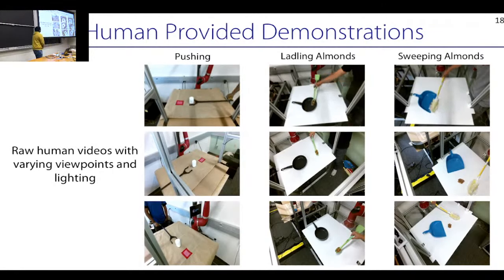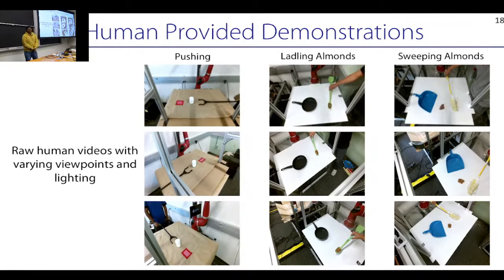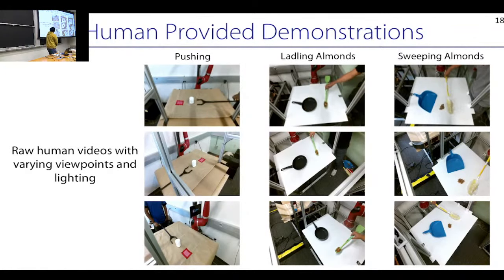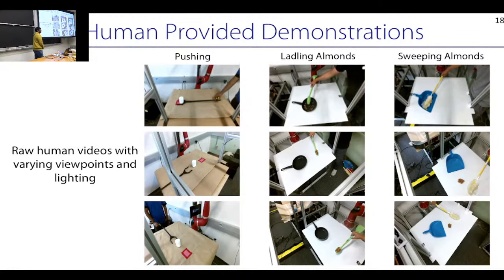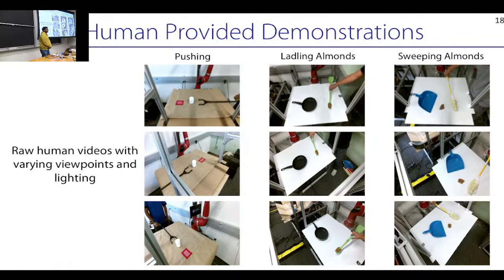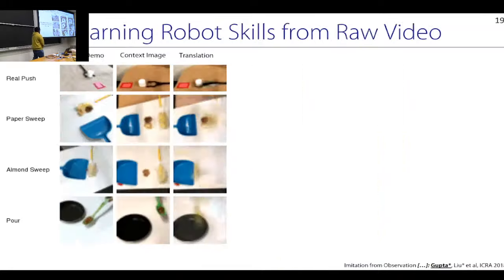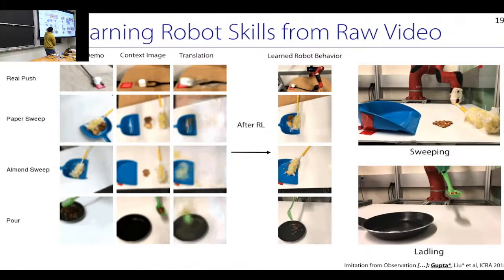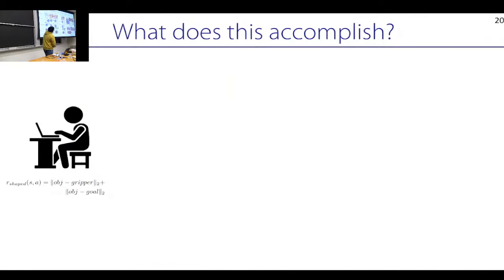Regarding the action space used: we used torques on some of the joints directly, so it was somewhat restricted — we didn't let the robot do full joint control.